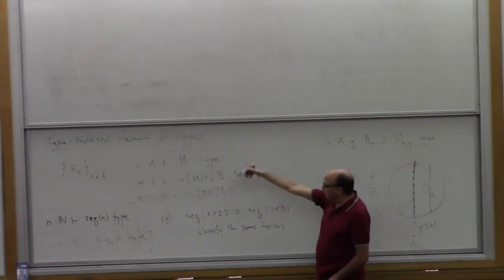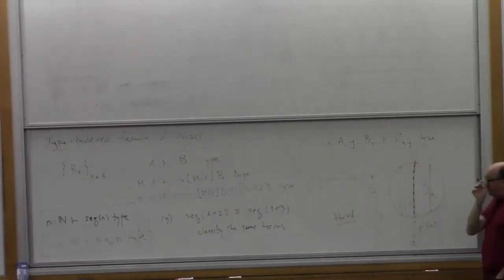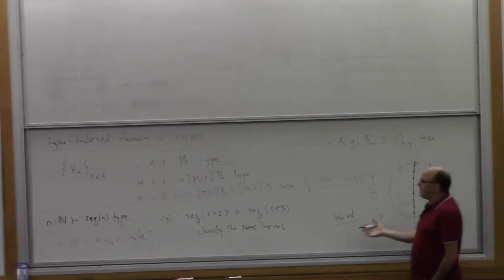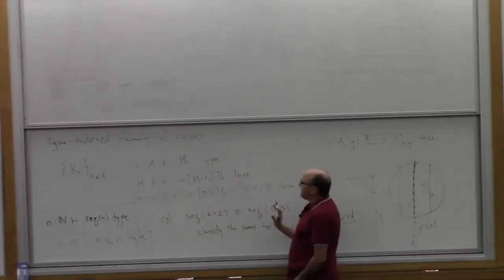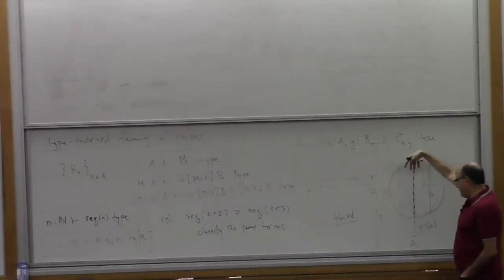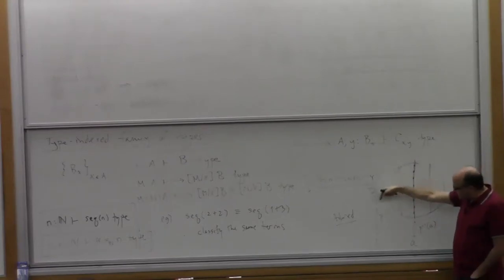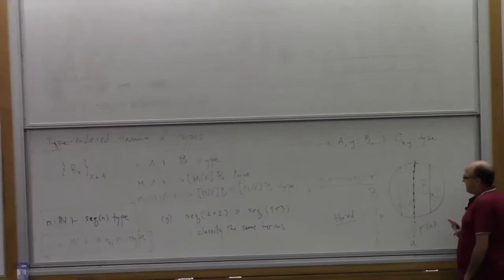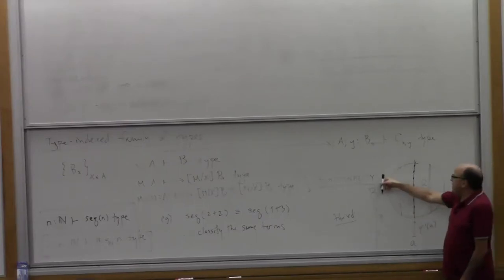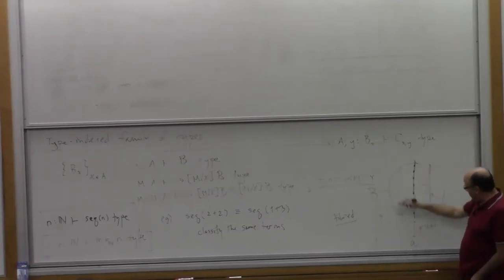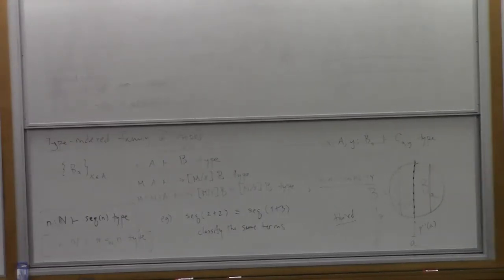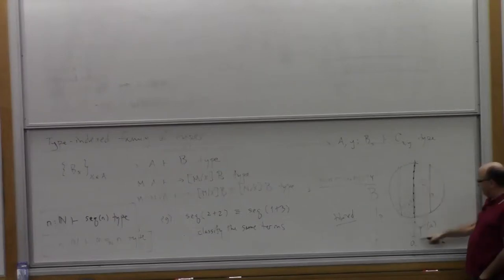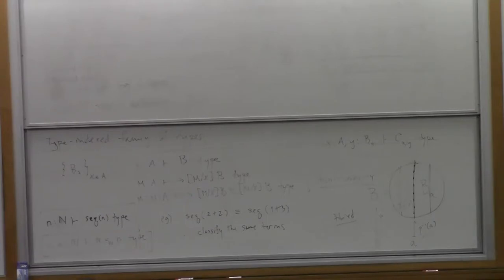These are two different ways of looking at families of types: the fibered viewpoint — thinking of the family as a projection P — and a functional viewpoint — thinking of the family as a mapping sending elements of a type to the class of types. You can also think of a family of types as a special sort of mapping P called a fibration, where the elements of a particular type are given by the preimages.